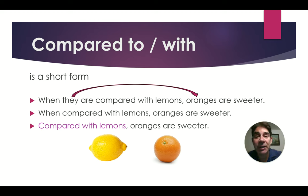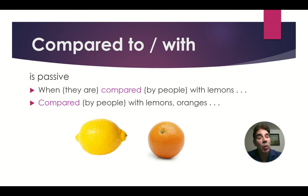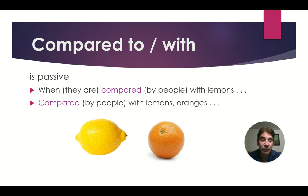Notice that the subject of the sentence here is 'oranges.' That's important to know, and we'll see why in just a minute. 'Compared to' or 'compared with' is passive. For example: 'When they are compared by people with lemons, oranges are sweeter.' So the people are doing the comparison, not the oranges. The shortest way would be: 'Compared with lemons, oranges are sweeter.'